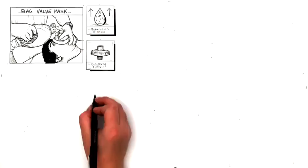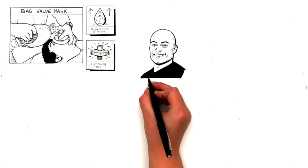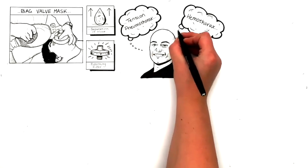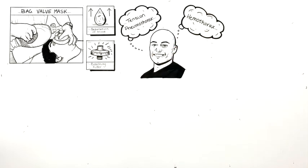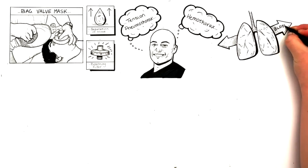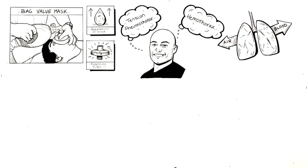I then moved on to bag valve masking and noticed that the bag became harder to squeeze and there was an increased saturation of blood in the breathing filter. I remembered these being traits of tension pneumothorax and haemothorax. I told critical care and the paramedic who proceeded to do needle decompressions on both sides of the patient with one side oozing blood and the other expelling air.